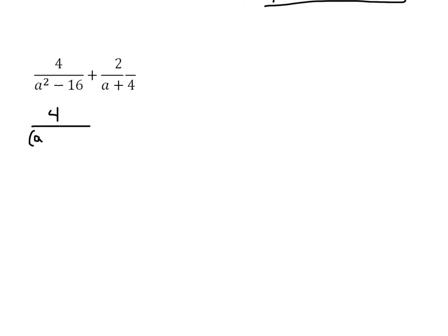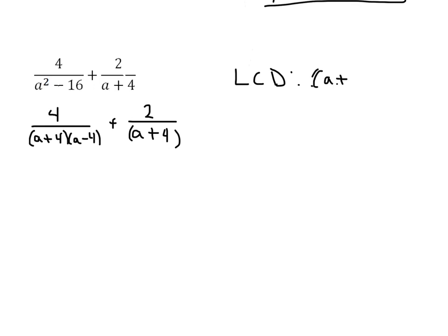...times a minus 4, plus 2 on top over a plus 4. Now as far as my LCD goes, we can see that both of these already have a factor of a plus 4, so we know our LCD has a factor of a plus 4. This one over here also has a minus 4, and this one doesn't — so our LCD is going to be a plus 4 times a minus 4.